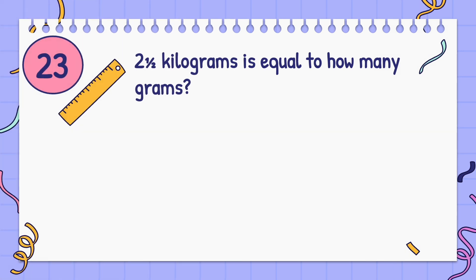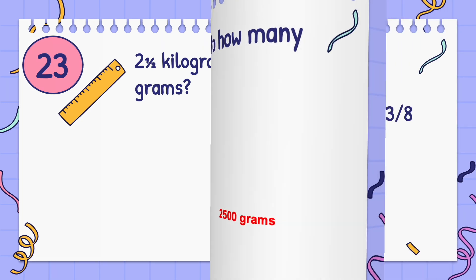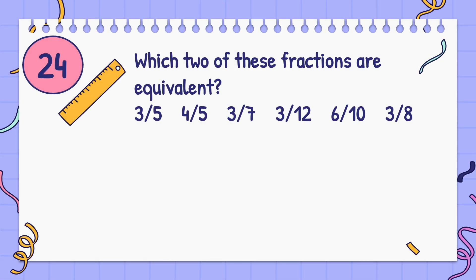2.5 kilograms is equal to how many grams? Order these fractions: 3/5, 4/5, 3/7, 3/12, 6/10, 3/8. Answer: 3/5, 6/10, 3/8.